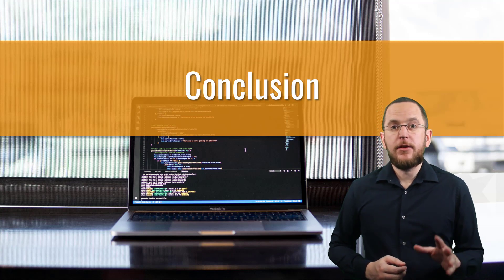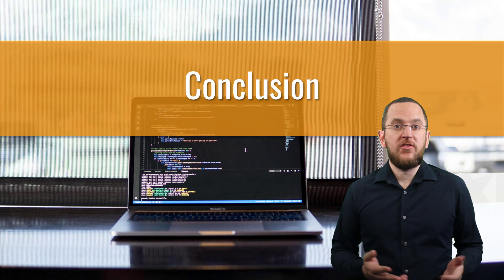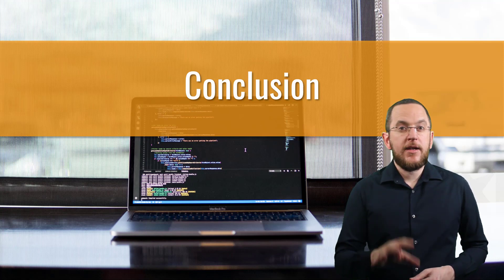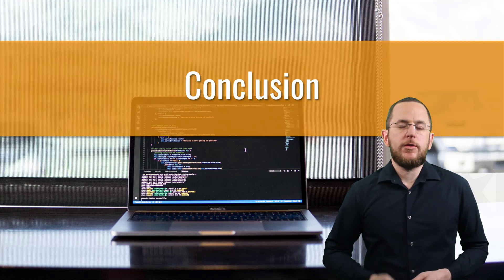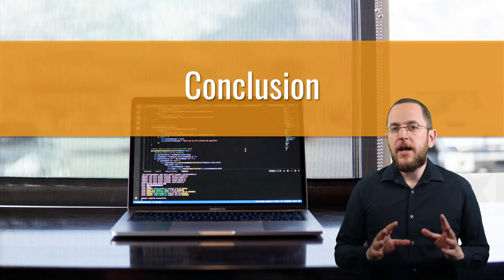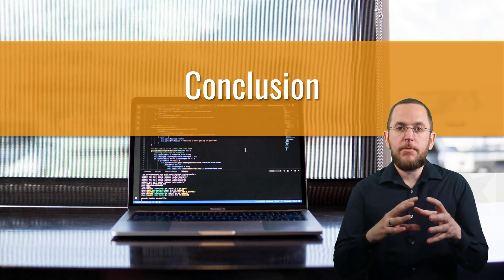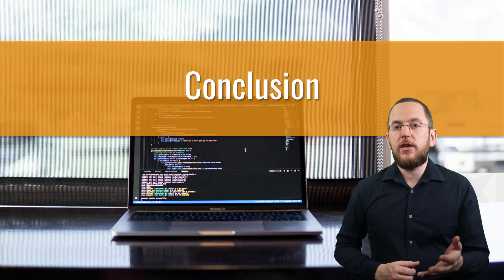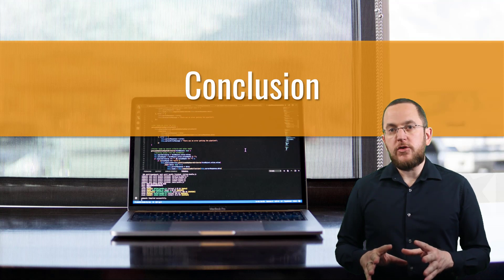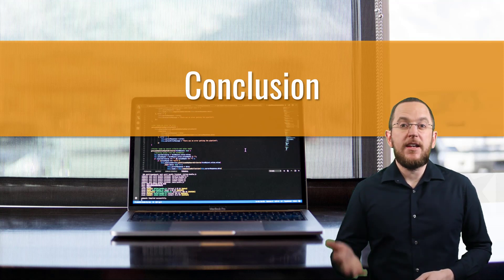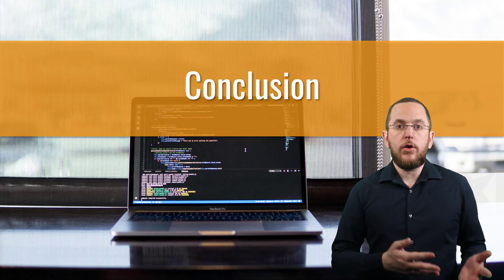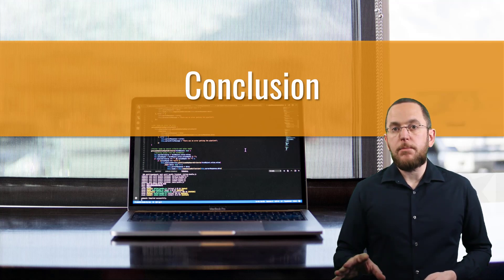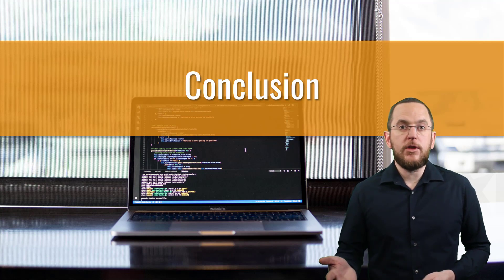JPA's and Spring Data JPA's detection and handling of changed entity objects makes implementing your persistence layer very easy, but it can cause performance issues if one of your use cases needs to update a huge number of database records. In that case, generating and executing an SQL update statement for each record will slow down your application. You can reduce the performance impact by activating JDBC batching, which groups multiple identical statements and their bind parameter values into a batch and sends them to the database, reducing round trips. If you can express all update operations in one statement, you can avoid the performance problem entirely by implementing a modifying query using the @Query and @Modifying annotations.